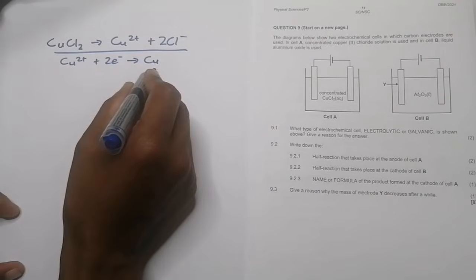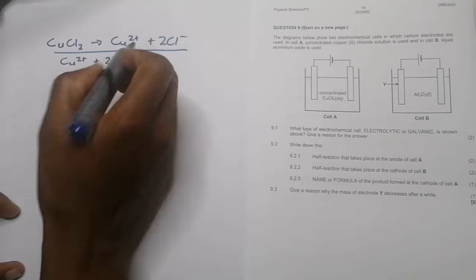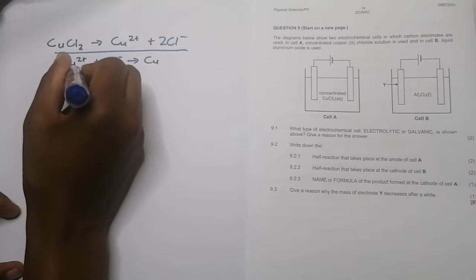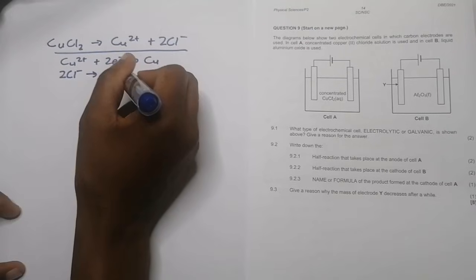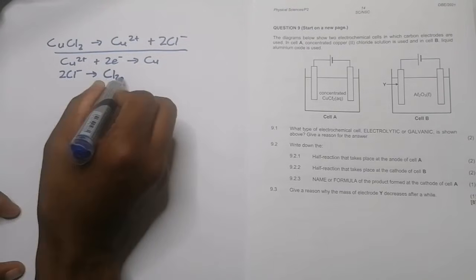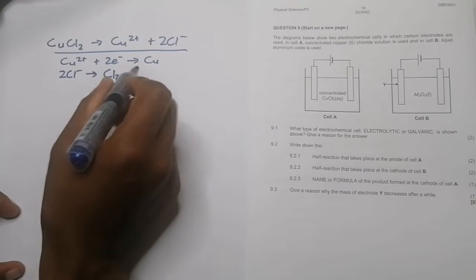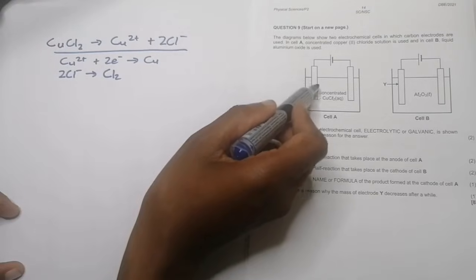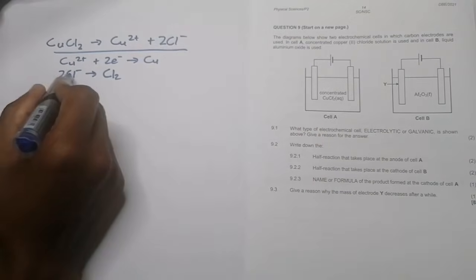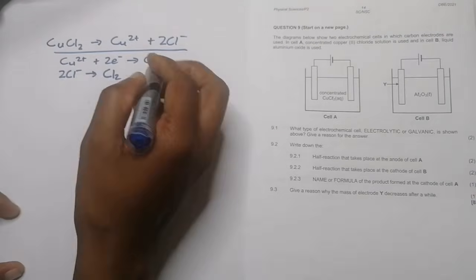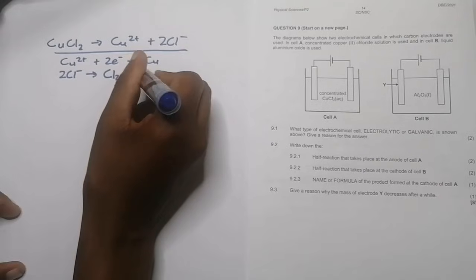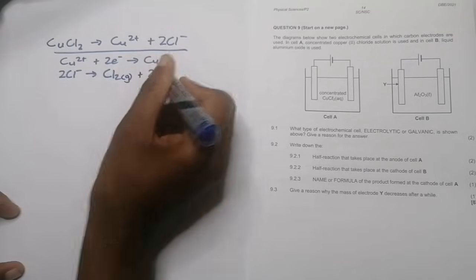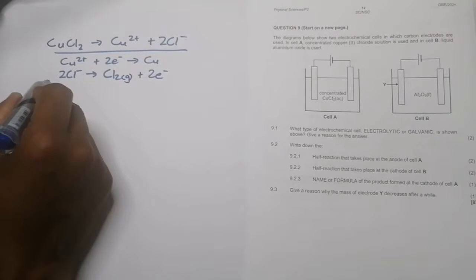And then the chloride ions, and please remember this is given in your standard reduction potential table, so your chloride ions would actually become chlorine. So what you would see on the positive side is that it would attract the negative ions. In this case, they would now become chlorine gas. Remember, this is a gas and this happens when it loses electrons.